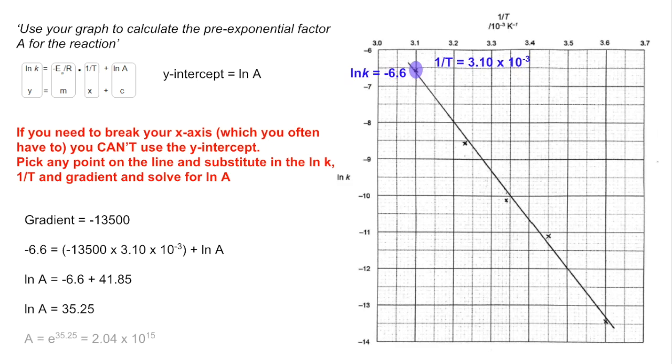So A is e to the 35.25, which comes out to three significant figures at 2.04 times 10 to the 15. And the units would be the same as the rate constant, whatever they are for this reaction.